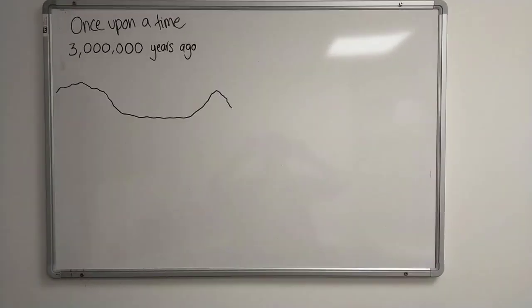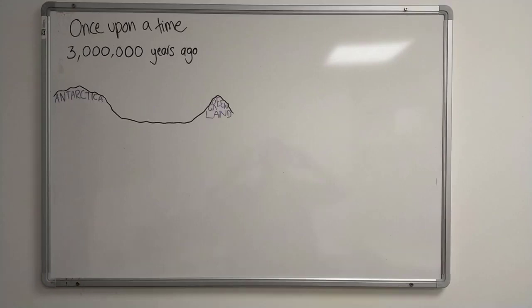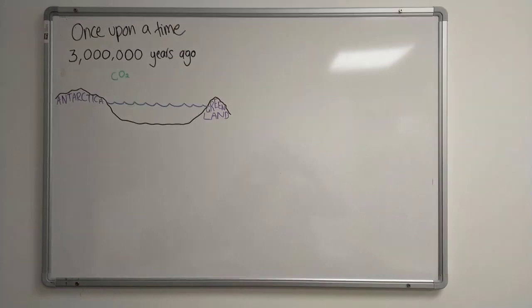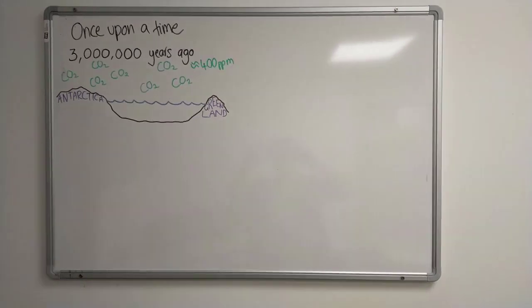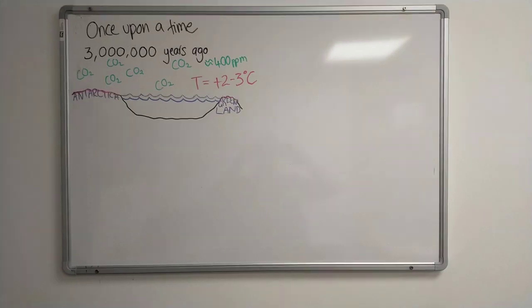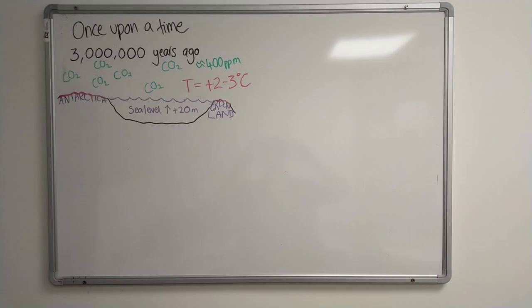the Earth was very similar to today. We had an Antarctic ice sheet and a Greenland ice sheet and an ocean in between. Atmospheric carbon dioxide was similar to the levels we've reached today. And in response to that, temperature was two to three degrees warmer. The ice sheets melted under these conditions and sea levels rose by 20 metres.